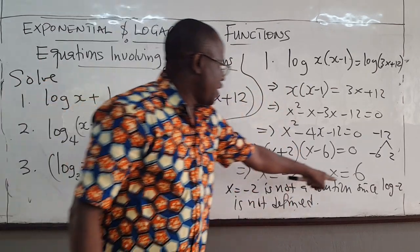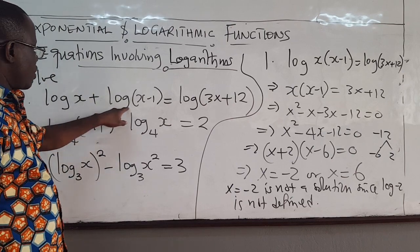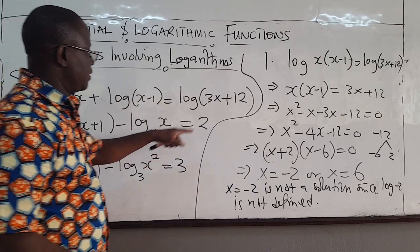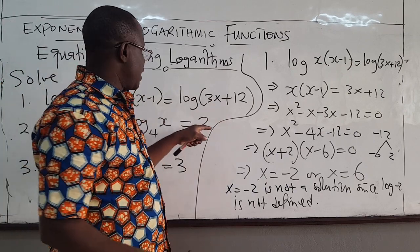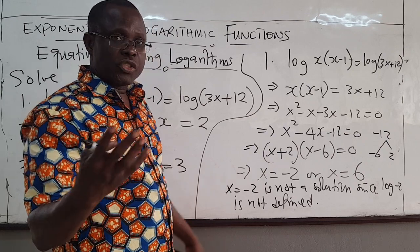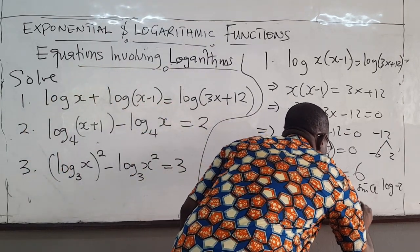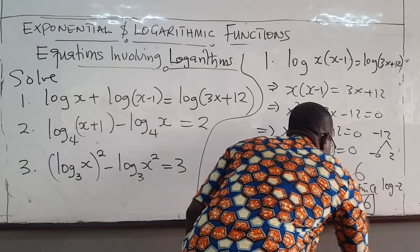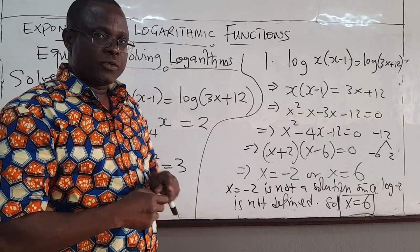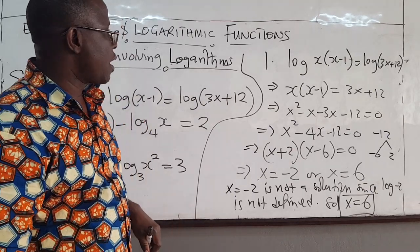Then we'll try 6. If you put 6 there, you have log of 6, that is fine. Log of 6 minus 1 is 5, that's okay, log of 5. And this is obviously fine. So the only solution is x equals 6. So you always have to check for that when you are solving equations involving logarithms.